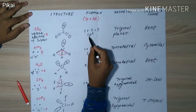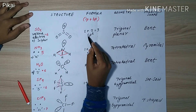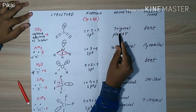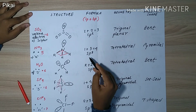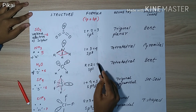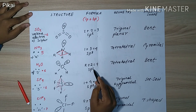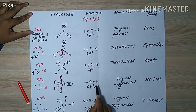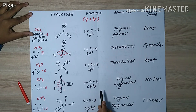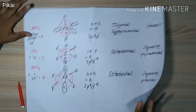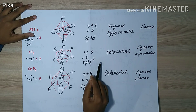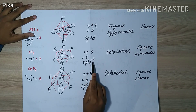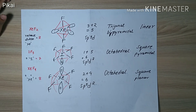So what we have learned is that lone pair plus bond pair gives the hybridization number. Three denotes sp2, four denotes sp3, five denotes sp3d, and six denotes sp3d2 hybridization.